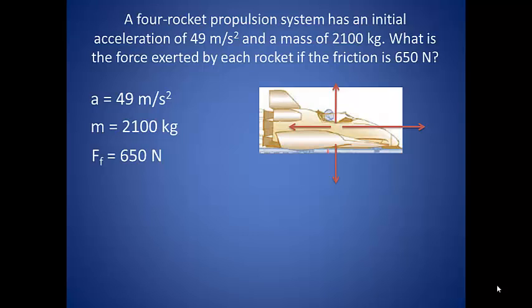Now example problem 4.2 in your book talks about a four rocket propulsion system with an initial acceleration of 49 meters per second squared and a mass of 2100 kilograms. We want to know what is the force exerted by each rocket if the friction is 650 Newtons. So we have our four forces acting on the rocket. Since there is no vertical motion, the gravity is balanced by the normal force, so we can ignore those in our net force calculations. The rockets are applying a force that is pushing the rocket to the right, and friction is applying a force pulling the rocket to the left. We are looking for the force, and we can find the total force pretty easily based on the mass and acceleration we were given.